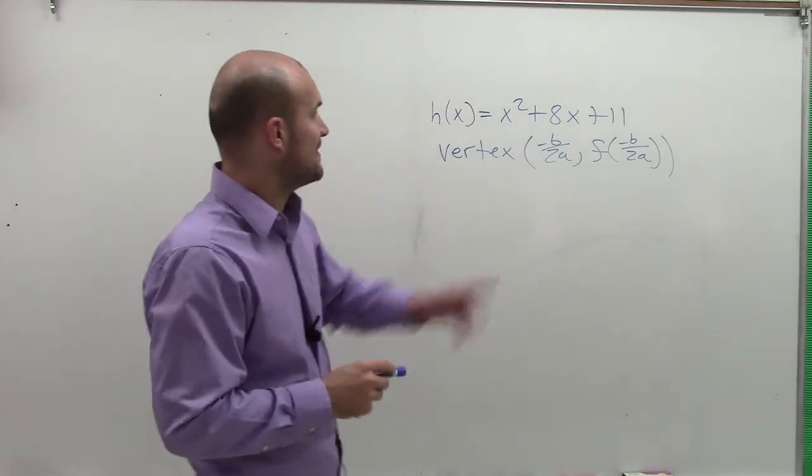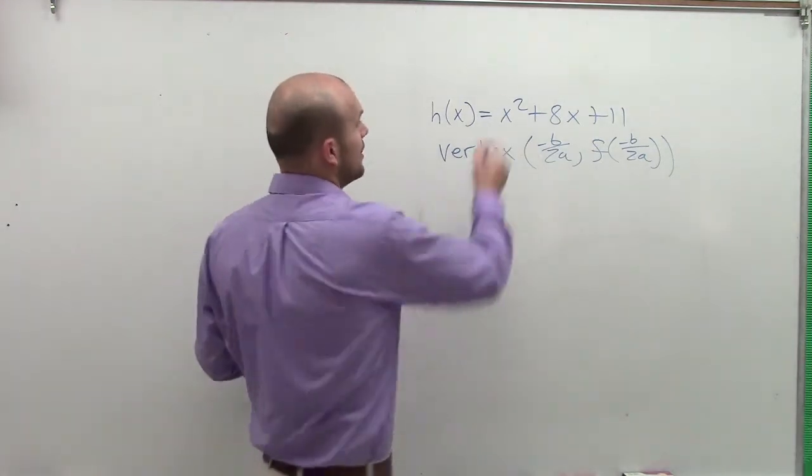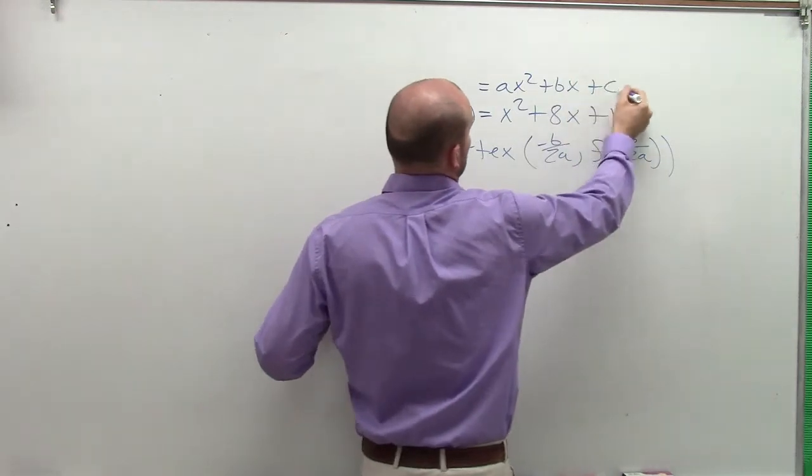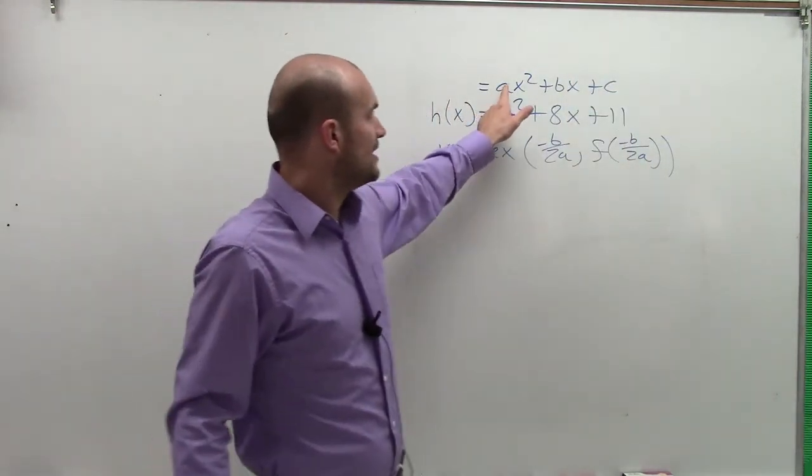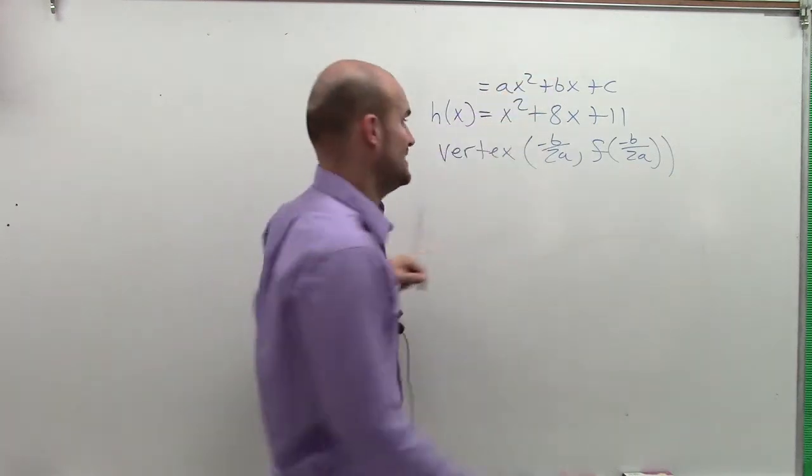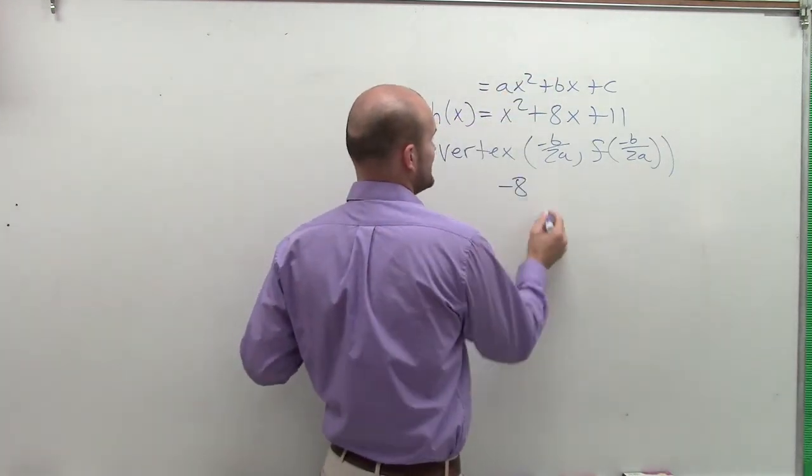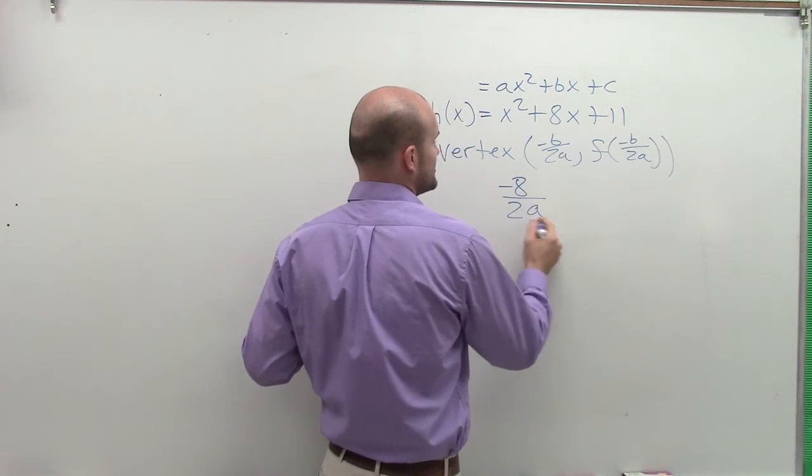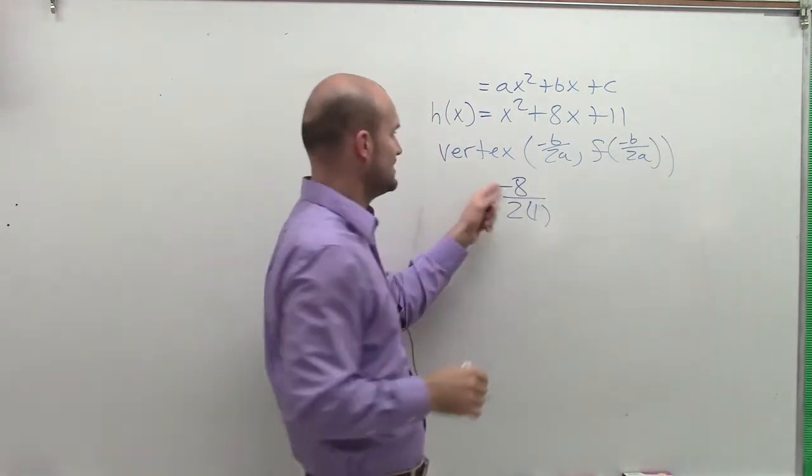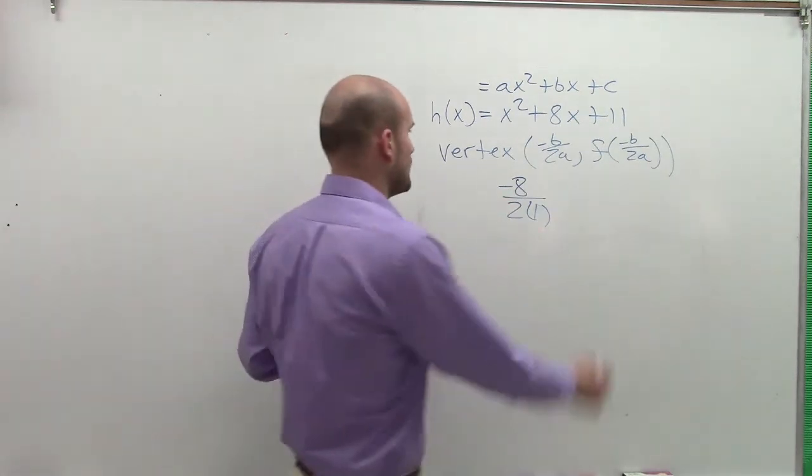So we got that going for us. So the first thing we need to do is find opposite of b divided by 2a. Remember, the definition of a quadratic is ax squared plus bx plus c. So in this problem, my b is 8. So I'm going to take opposite of 8, positive 8, divided by 2a, which is, in this case, 1. So opposite of b divided by 2a, negative 8 divided by 2 is negative 4.